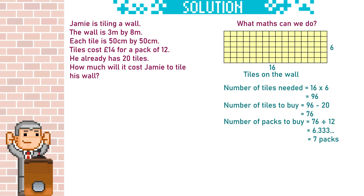We need to get 7 packs in total. Finally we're looking for the cost — each pack is £14, so we do 7 times 14, which is £98 in total. The final step is just to check that the answer feels correct. Does it feel like it's going to cost roughly £98 to buy these tiles? That feels right.